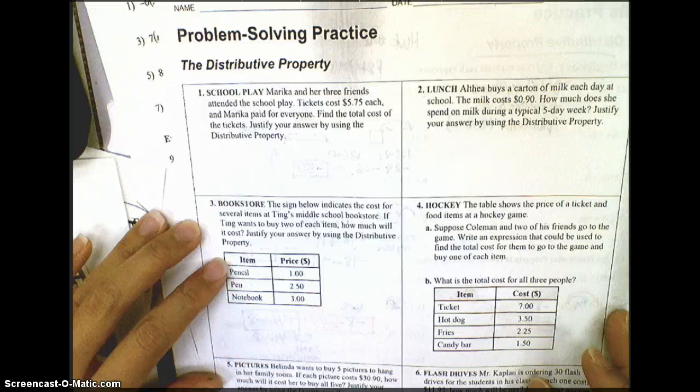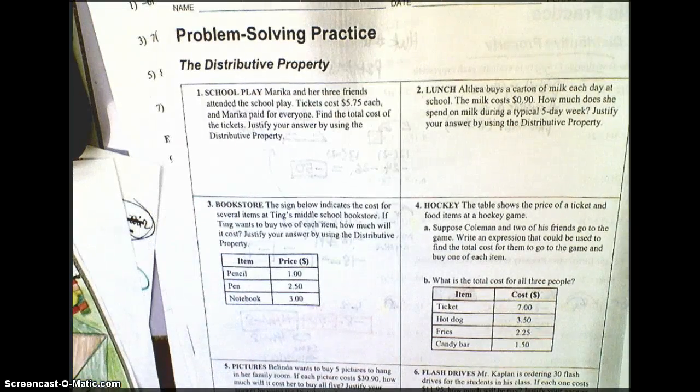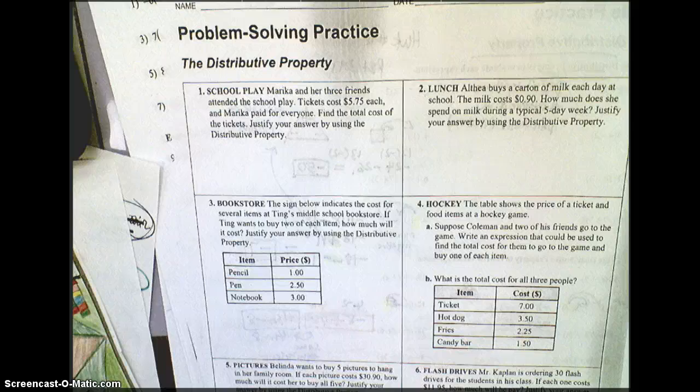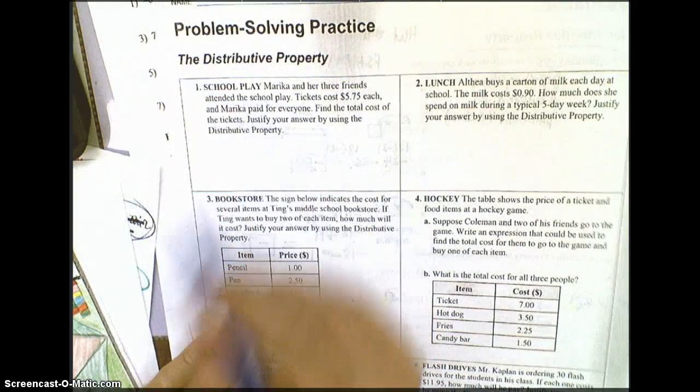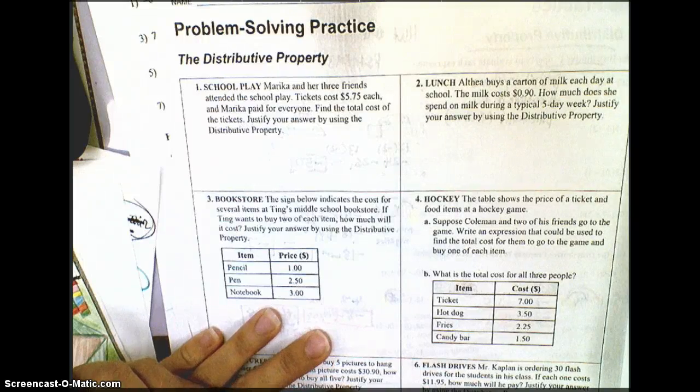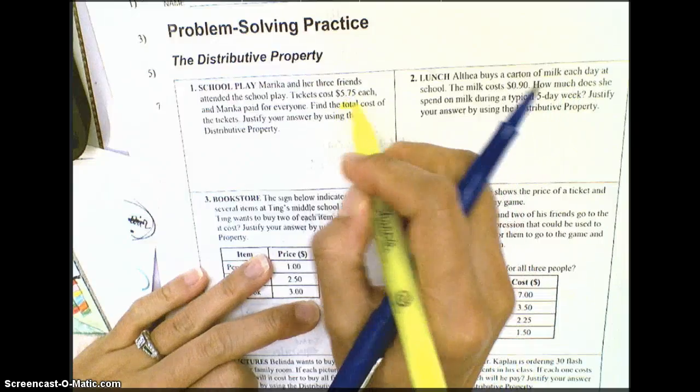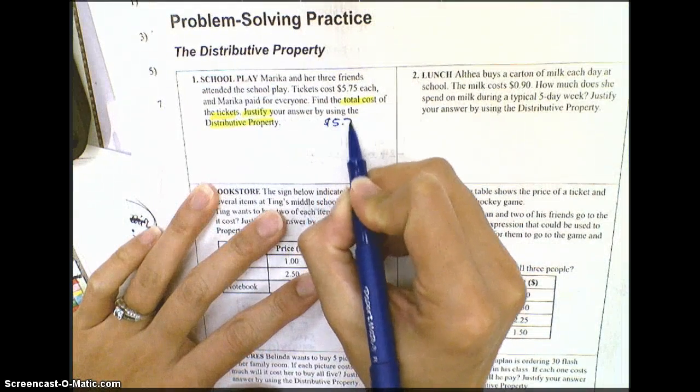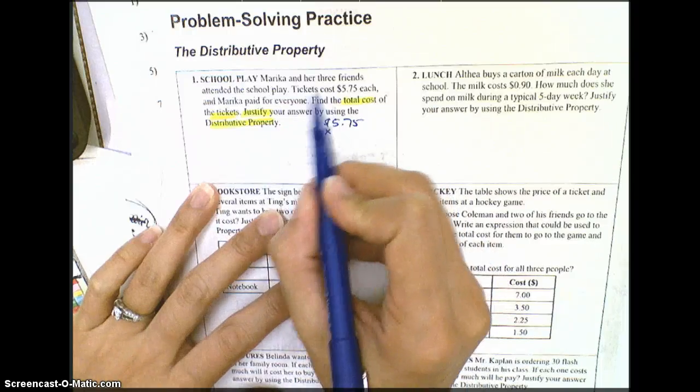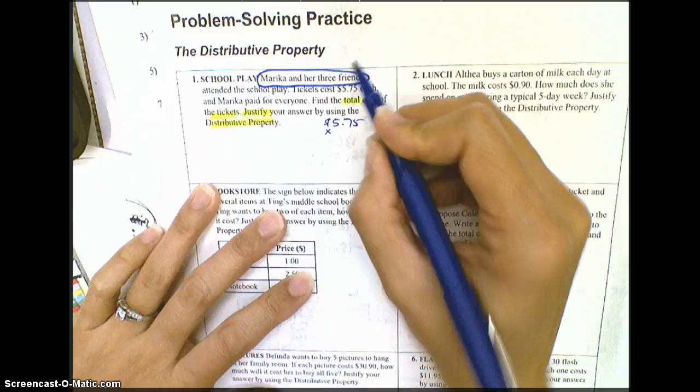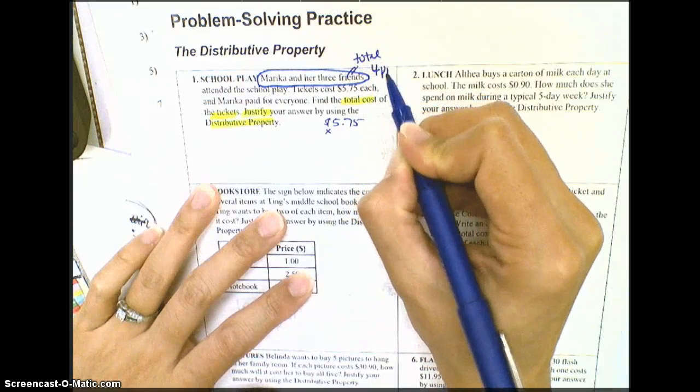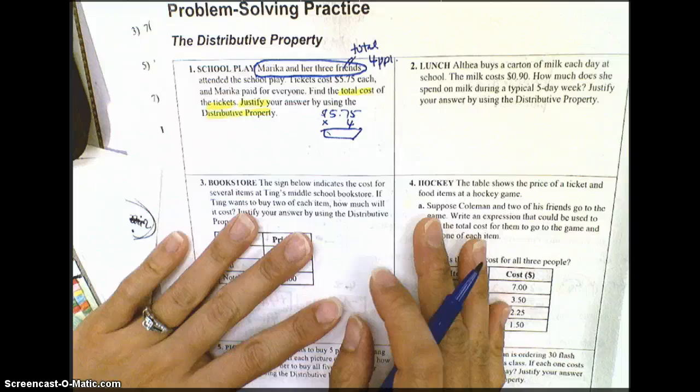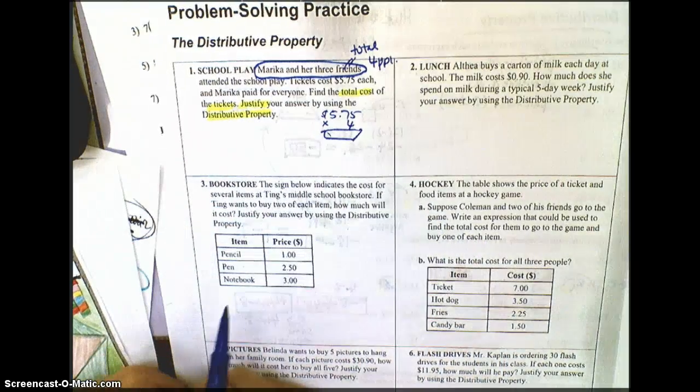The back of the worksheet, let's start with number 1. As we use the distributive property, it's kind of an easier way for us to add numbers or subtract them after we do some multiplication. Go ahead and read number 1 to yourself. Pause here. All right, we are looking to find the total cost of the tickets, but we do want to justify with a distributed property. We could simply just take $5.75 and multiply it with Marika and her three friends, which means four people total. That's a good way to check when we're done.